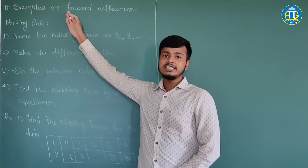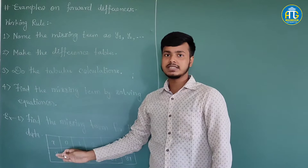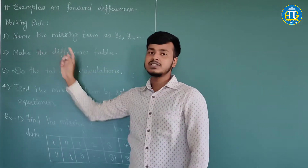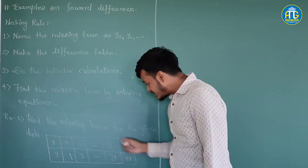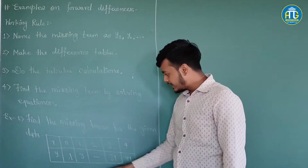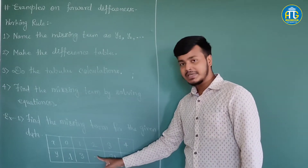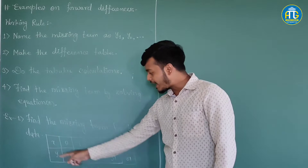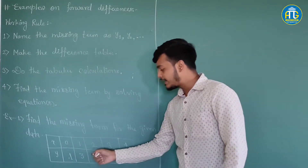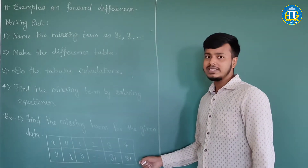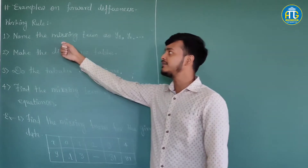Before we start with the example, let us first see what is the working rule to solve the problems. The very first rule says you have to name the missing term. Suppose a data like this is given to you and there is a missing term — I can name this missing term as y1. If two missing terms are there, I will name the first one as y1 and the second one as y2. This completes the first step.